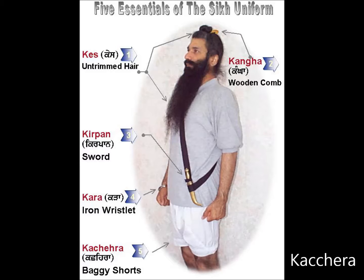Kachera: Originally, the Kachera was made part of the five Ks as a symbol of the Sikh soldier's willingness to be ready at a moment's notice for battle or defense, allowing them to get around quickly in a fight. A confirmed Sikh who has taken the Amrit wears a Kachera every day. Some go to the extent of wearing a Kachera while bathing — to be ready at a moment's notice — changing into a new one one leg at a time, so as to have no moment where they are unprepared.